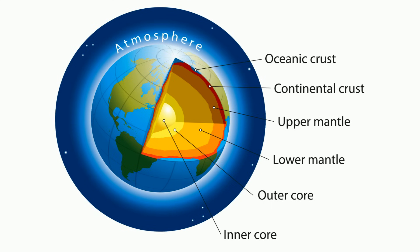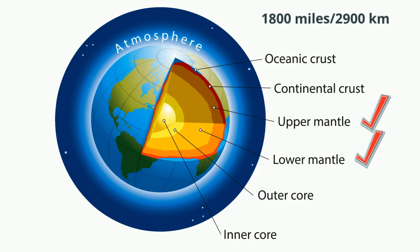The mantle is located between the crust and the core. It's a region of hot, slow-moving, solid rock. The mantle is 1,800 miles thick or 2,900 kilometers and is composed of silicate minerals similar to the ones found in the crust, except with more magnesium and iron and less silicon and aluminum.